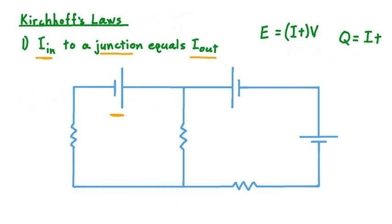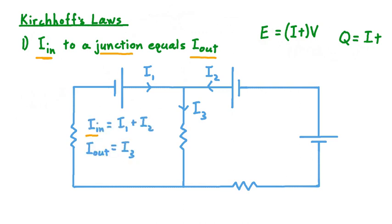Considering our circuit on screen, let's say that this voltage source produces a current we'll call I1 in this direction, and these two voltage sources working together generate a current I2 pointed this way. We can see that these two currents will meet here at this junction point. When they do, a third current magnitude I3 will exist in this branch of the circuit moving down. So the total current moving into this junction is I1 plus I2, while the total current coming out is I3. Kirchhoff's first law, sometimes called Kirchhoff's current law, says that I1 plus I2 is equal to I3.